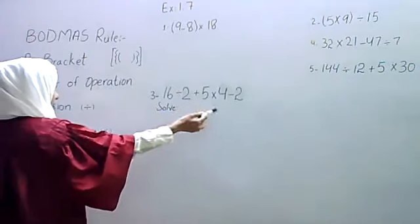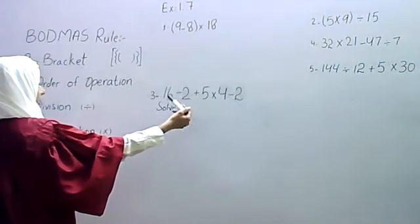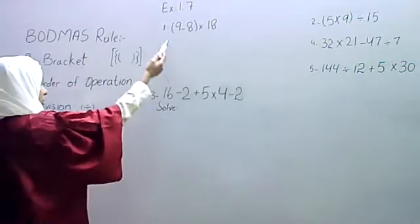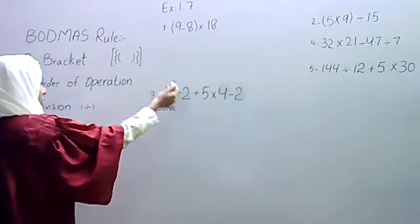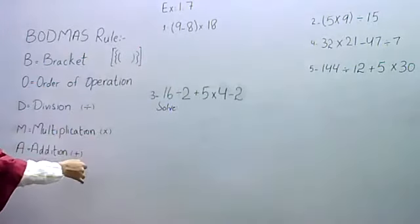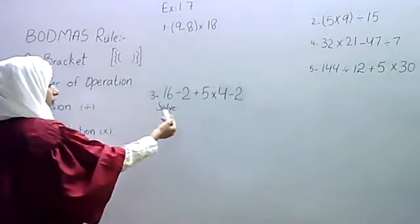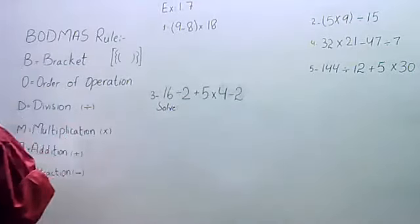When we have this question number 3, we have addition, subtraction, multiplication, and brackets. We have a rule of BODMAS, so we have an accurate answer. Students, BODMAS.